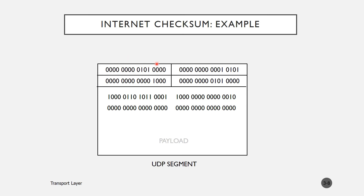Let's look at the UDP segment. This UDP segment has a source field with a value of 0110100000, and a destination port with a value of 0101000. The length is 8 bytes — total 8 bytes of data — so the length field value is 8.